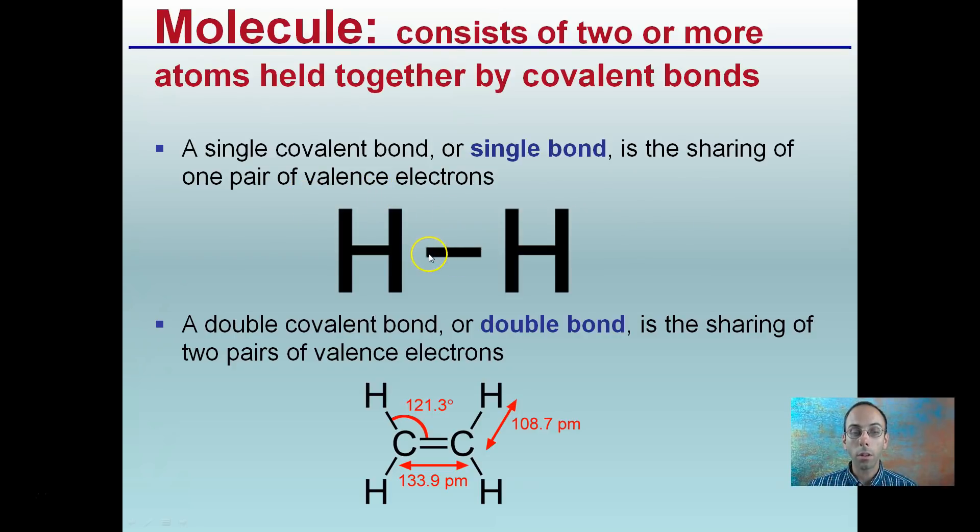A single covalent bond or single bond is the sharing of one pair of valence electrons. Remember, this line, there's an electron represented here and here. We just kind of connect them together. A double covalent bond or double bond is the sharing of two pairs of valence electrons as we see here between these two carbons. It's double bond. Between this carbon and this hydrogen, we have a single bond that's forming.